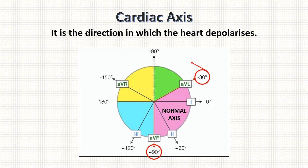Left axis is from minus 30 degrees to minus 90 degrees, which is depicted in green color. Right axis is from plus 90 degrees to plus 180 degrees, which is shown in blue color. There is one more axis beyond these two known as extreme axis, which is from minus 90 to plus 180 degrees.